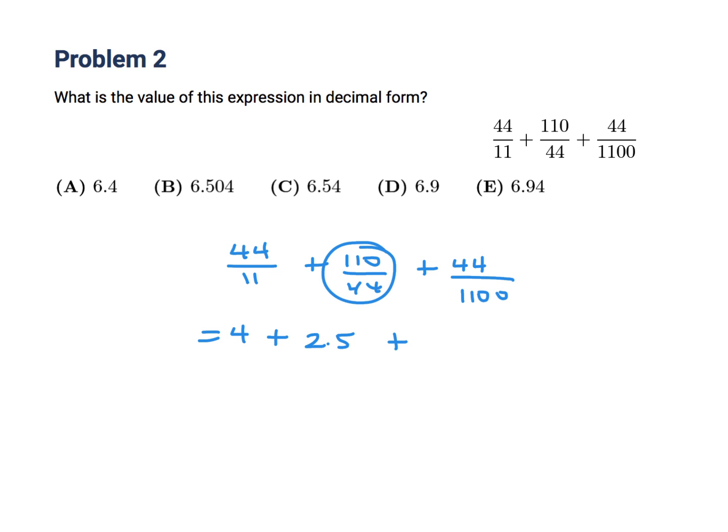This looks kind of similar to 44 over 1000. I mean, it's not exactly, but similar. So this approximately is 6.54. And of those answer choices, the one that's closest is C.